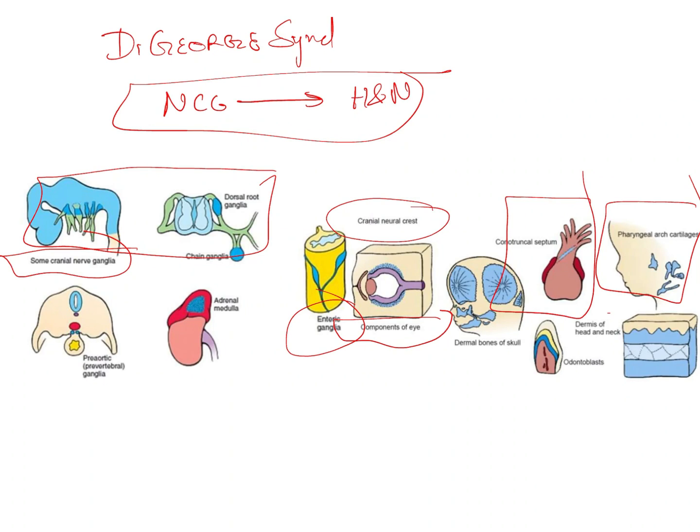septum, which is the most common cause of death. There will be problems with the odontoblasts of the tooth which form the dentin. There will be problems with the dermal bones of the skull as well. This is what we call DiGeorge syndrome.